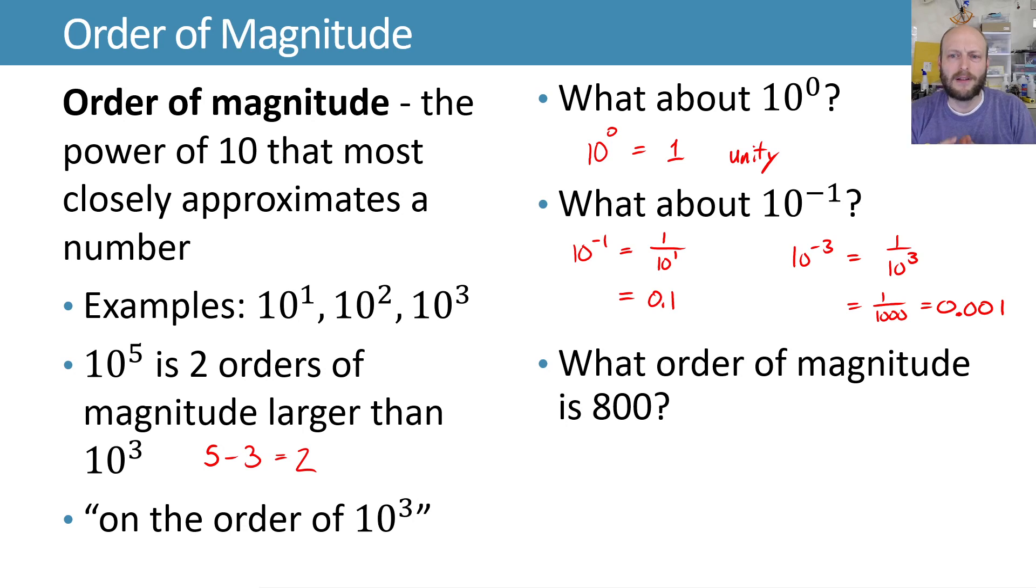So what about the number 800? What order of magnitude is the number 800? Well, it's between 100 and 1,000. It looks like it's closer to 1,000, but because of how this geometric scaling is going here,